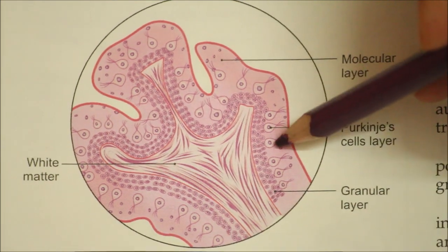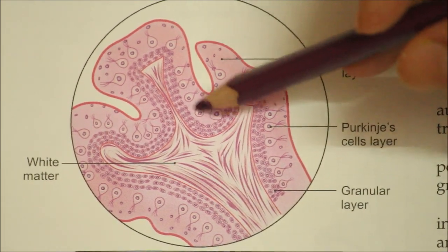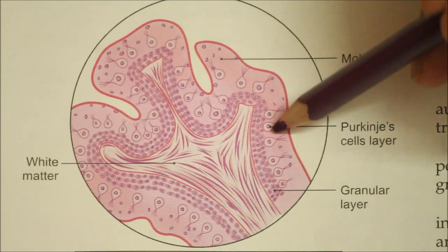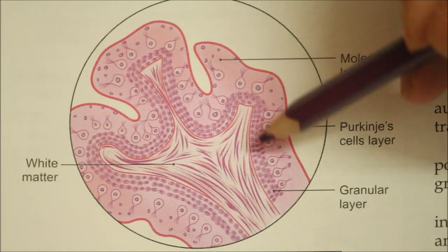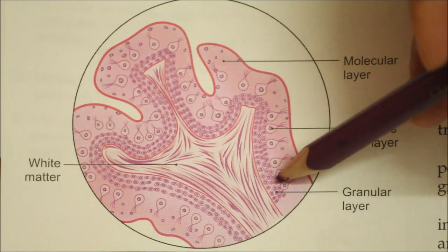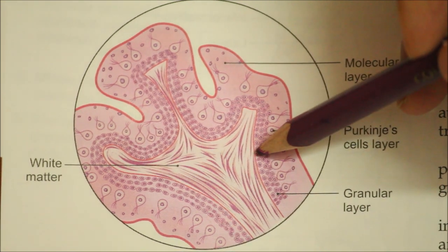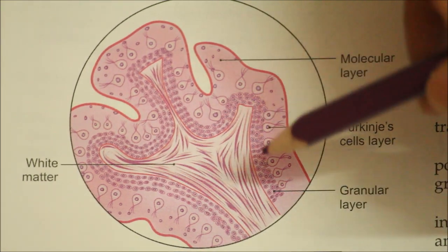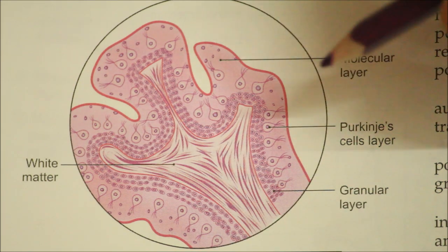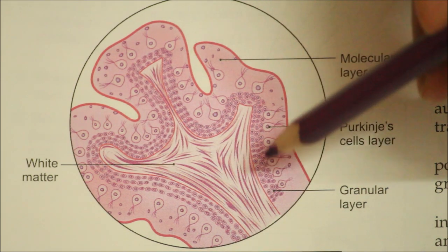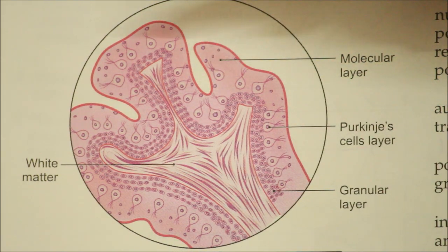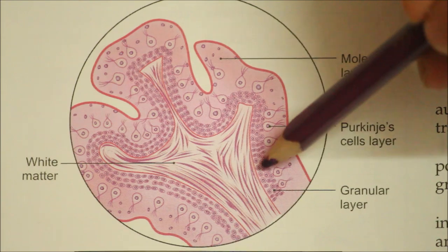Looking at the Purkinje cells: they are large flask-shaped cells and the characteristic neurons of the cerebellum. The granule cells are small rounded cells with dendrites. The Golgi cells are the largest neurons; they receive input from the parallel fibers, climbing fibers, and mossy fibers and send output to the granule cells.